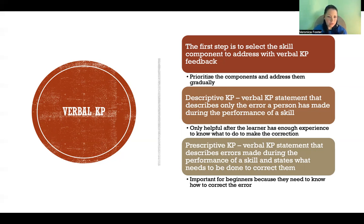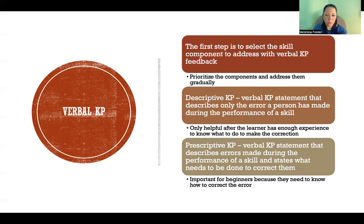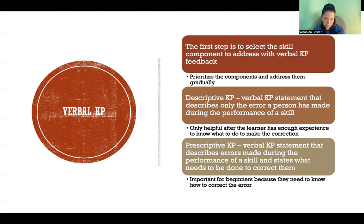Versus prescriptive KP, that's where you're giving the same information about what the error was, but then you're also giving information about how to correct that error. Descriptive KP is useful for advanced learners — someone who's pretty advanced in the skill. You give a little feedback that they did something incorrectly, and they have enough experience to know how to correct that problem, so you don't need to give the prescriptive KP.